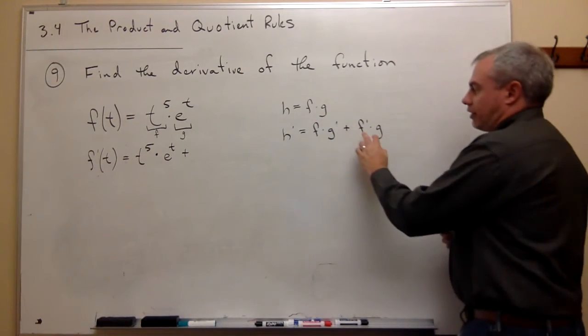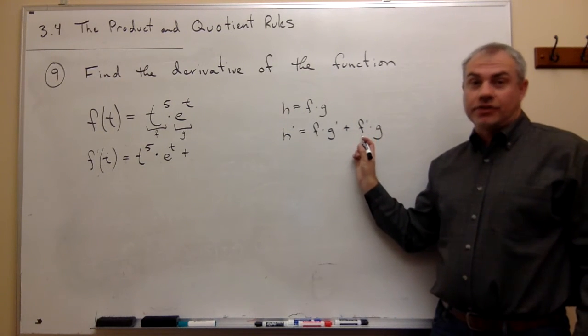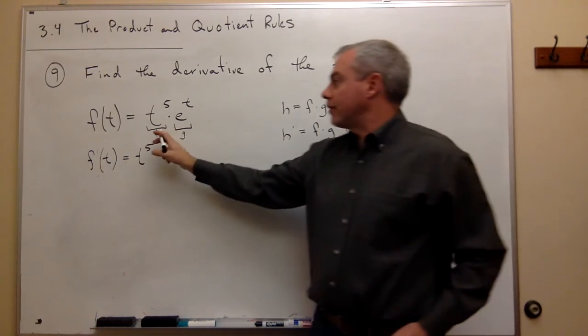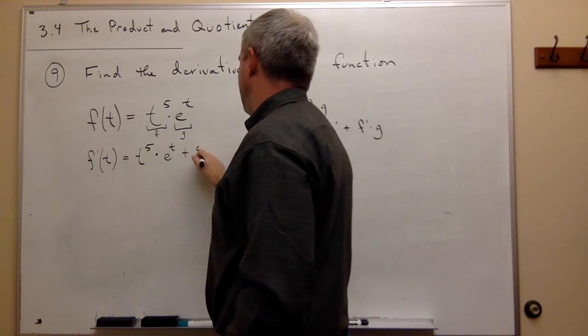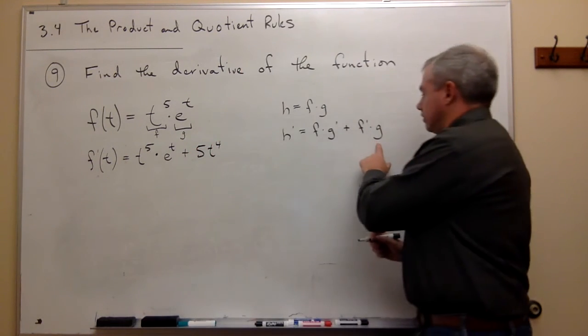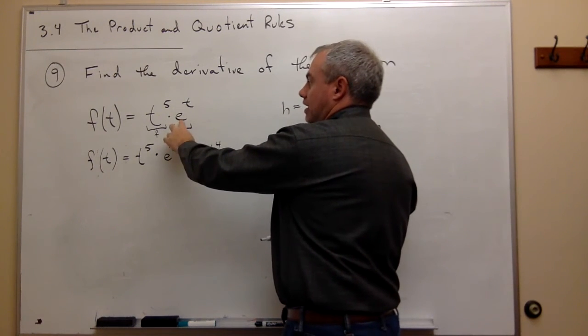Plus, then my derivative formula says I need to take the derivative of the first function and then multiply that by the second function. The derivative of the first function, the derivative of f, is 5t to the fourth. And then I want to multiply that by g left alone. g left alone is e to the t.